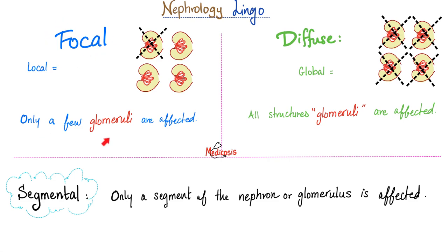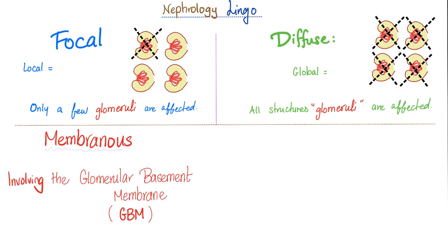Nephrology has a certain lingo you have to master. What does focal mean? Affecting only a few glomeruli. What does diffuse mean? Affecting all the glomeruli. What is today's topic? Membranous nephropathy. What does nephropathy mean? Pathology of the kidney. What does membranous mean? Involving the glomerular basement membrane. Other textbooks describe this disease as diffuse membranous, meaning it affects the glomerular basement membrane of all your glomeruli.